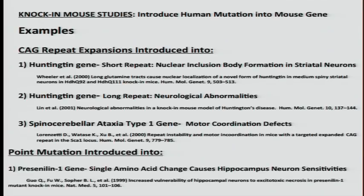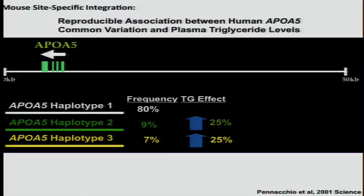There have also been papers introducing point mutations. One paper introduced a single amino acid change into the presenilin gene. While these mice didn't get detectable Alzheimer's disease, there were various types of neuronal sensitivities when challenged with various substrates. This isn't formal proof, but it does show that this point mutation has phenotypic consequences in vivo.